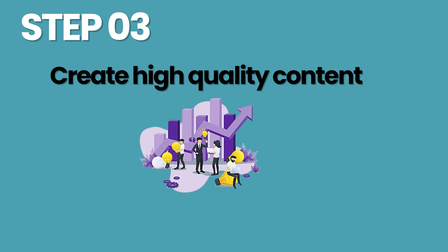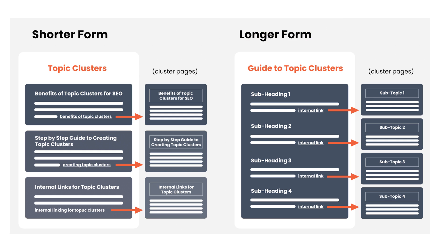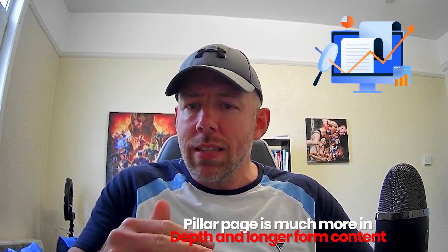Step three is create high quality content. There are two types of content to think about: pillar pages and cluster pages. Two common forms of pillar pages are shorter form and longer form. With shorter form, it's not quite as extensive — it has small areas of content which explain the cluster pages briefly and then link off to them. For example, a piece of content around topic clusters might have a subheading about the benefits of topic clusters, briefly describe that, and then link off to a much more in-depth piece. Sometimes you need to go more in-depth on a topic, and that's where longer form comes in — the pillar page is much more in-depth, but you're still going to have contextual links linking off to cluster pages.